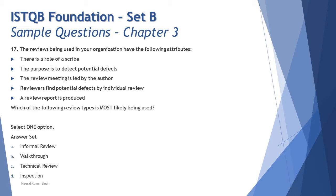Point four: reviewers find potential defects by individual review. Individual review is a process in technical review and inspection, but does not happen in walkthrough — it's optional there — and informal review doesn't have it at all. Optional means it's not a mandatory step. Finally, a review report is produced in most review types except informal review, but in walkthrough it is optional again.